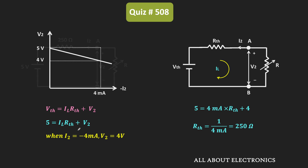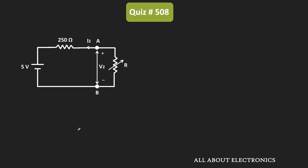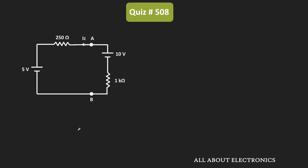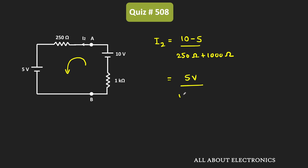Looking at the equivalent circuit, even if the load changes, the circuit on the left-hand side of terminal AB remains the same. The variable resistor R is now replaced by the new load. Applying KVL in the new equivalent circuit, the current I2 = (10V − 5V) / (250Ω + 1000Ω) = 5V / 1250Ω = 4mA. So with this given circuit, the value of current I2 is equal to 4mA.